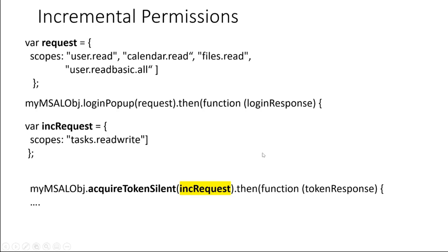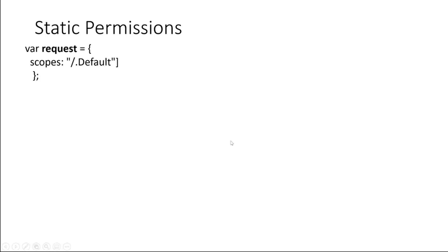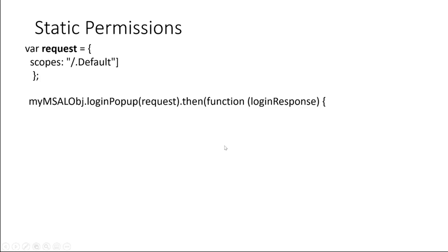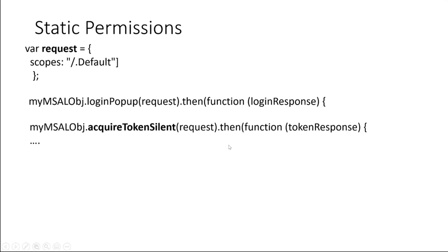This is how we make the request with incremental consent while making a call to acquire a token. The final permission type is static permission — the slash.default scope — which we already used with older library versions. Here, when the application wants to use everything already declared in the portal without managing incrementally or dynamically, this is the slash.default permission. This is used for daemon services or backend services where there is no signed-in user. It's not recommended where there is a signed-in user present.